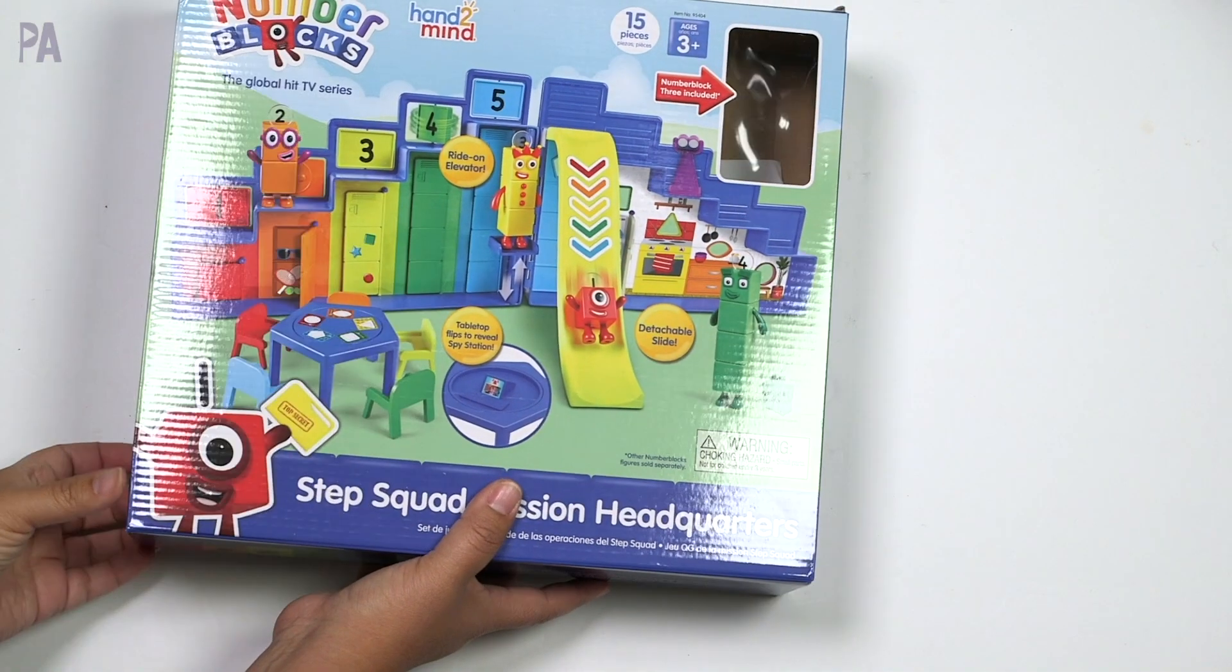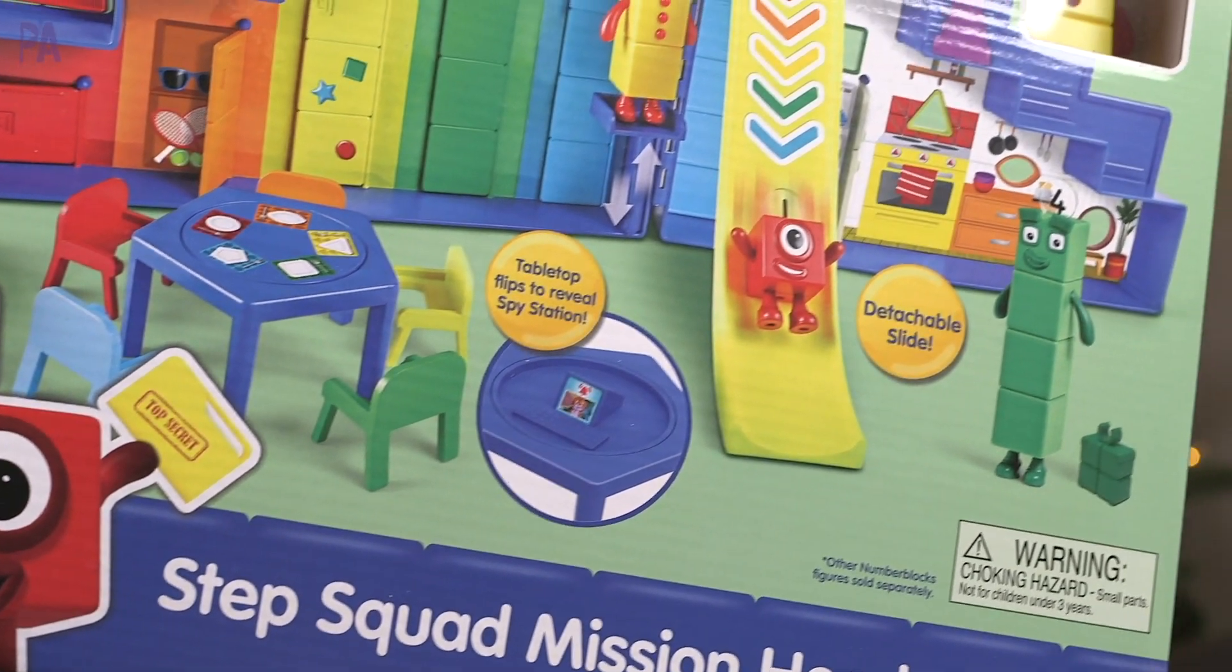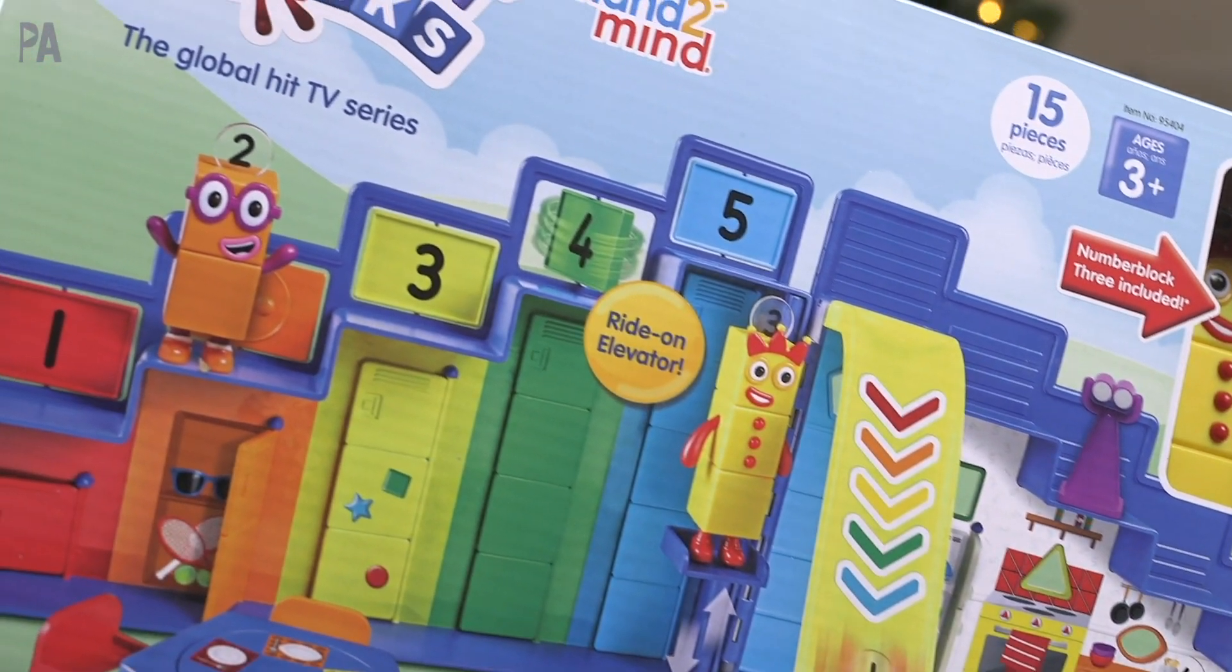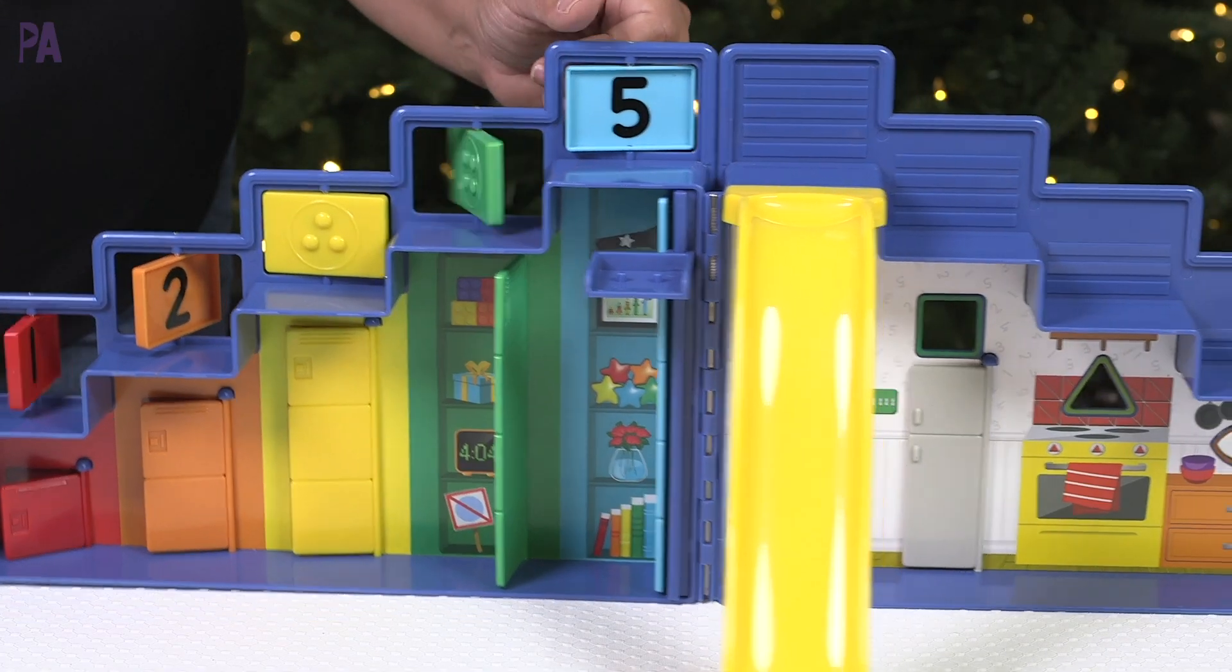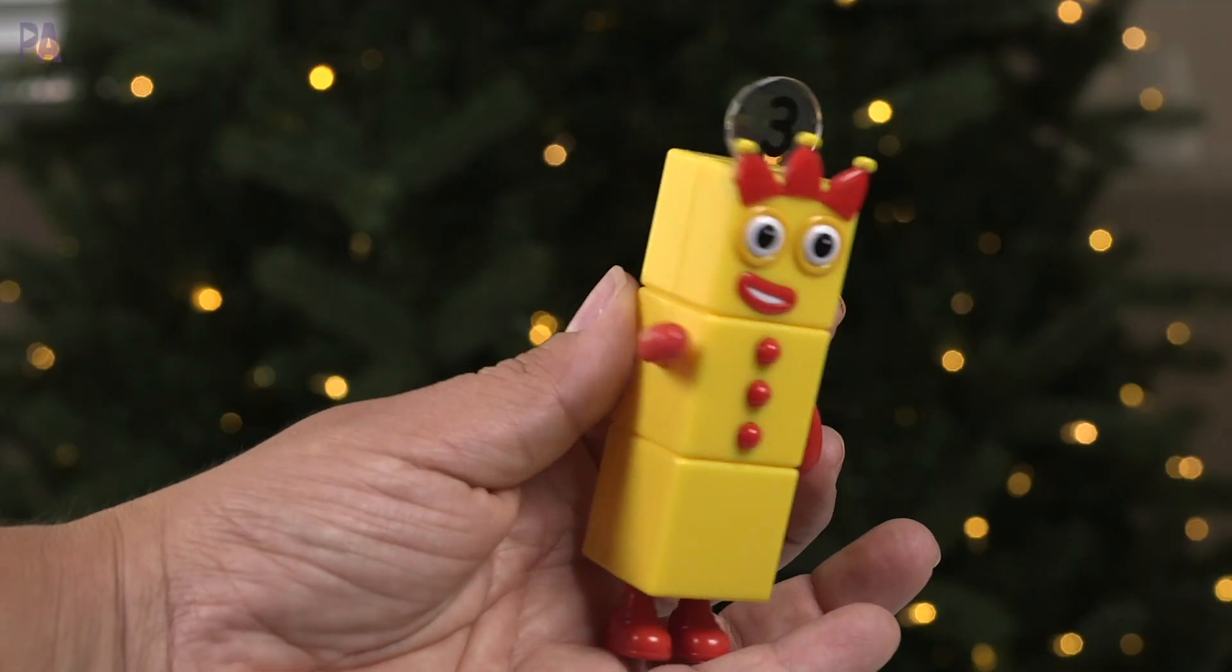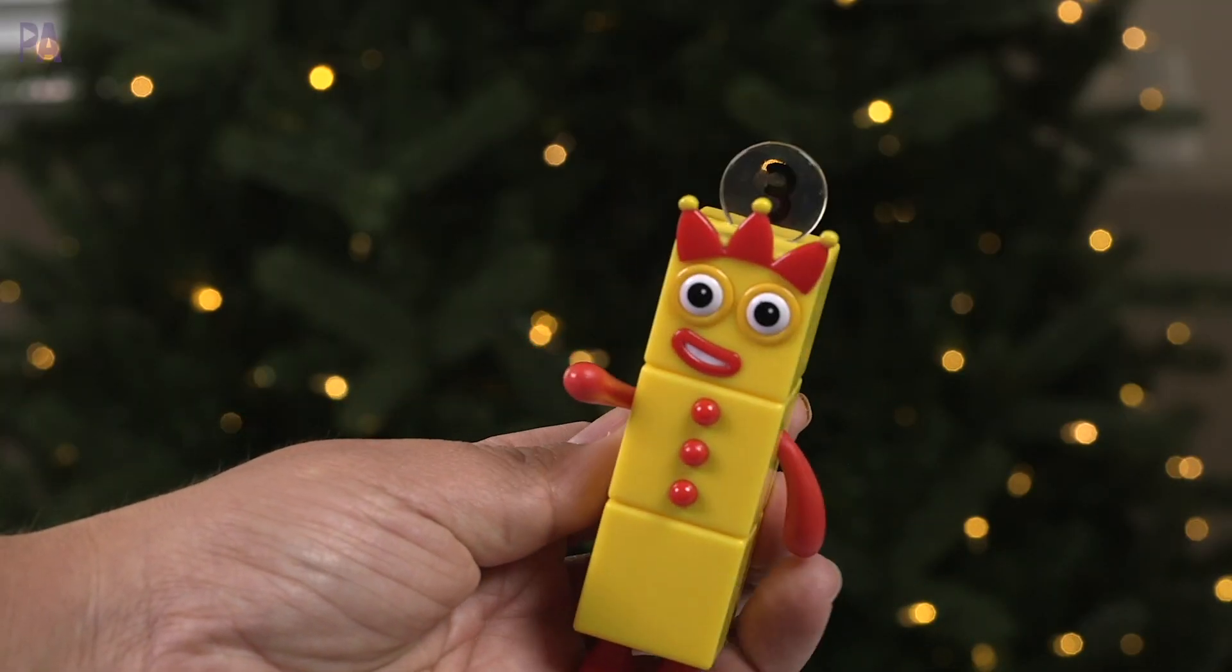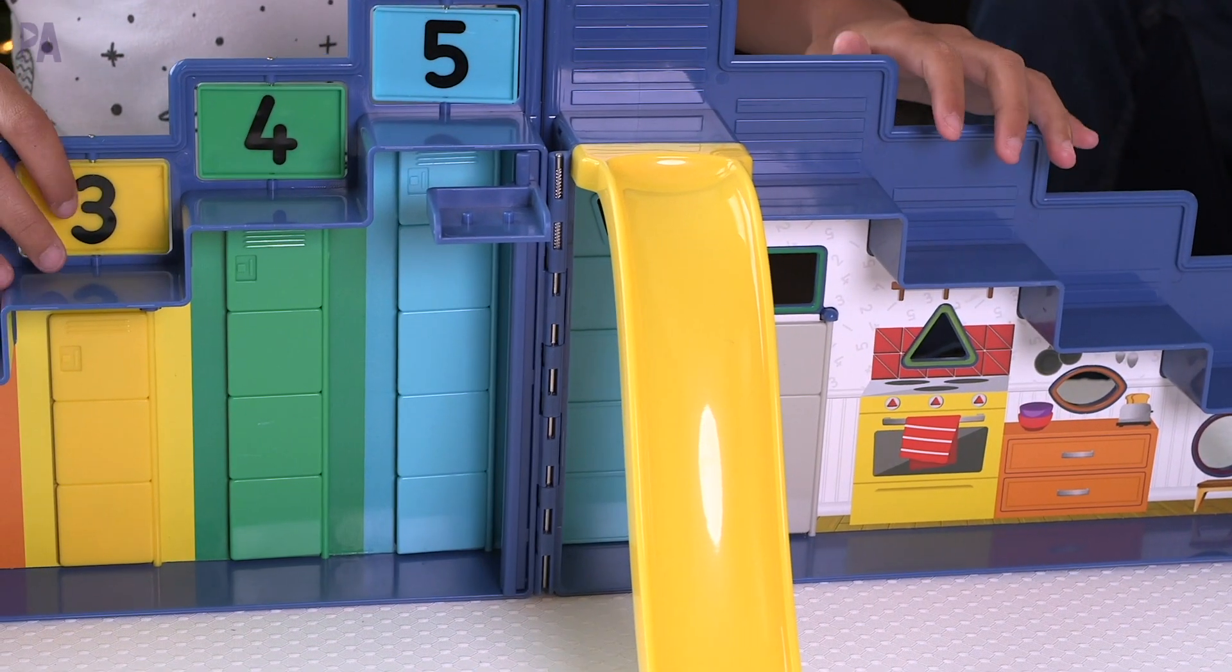From Hand2Mind Number Blocks Step Squad Mission Headquarters is for ages three and up. There are 15 pieces in here and this playset opens to over 25 inches wide. So you get the folding playset, the number block that's the three figure made out of three ones, and the detachable slide that goes right onto the top of the number steps.